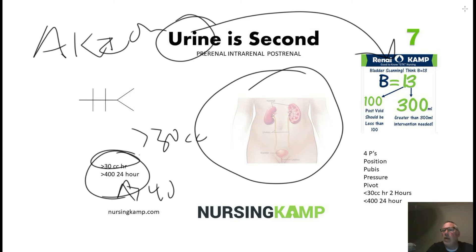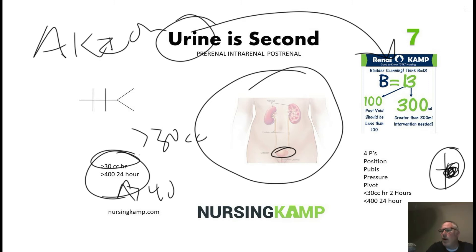We can assess urinary output with a bladder scan — an ultrasound that assesses the bladder to see whether there is actual fluid or urine present. This is important because if a patient has no urinary output, we need to determine if this is a post-renal problem. We always assess before we implement, always assess before placing a Foley catheter, which is more invasive.